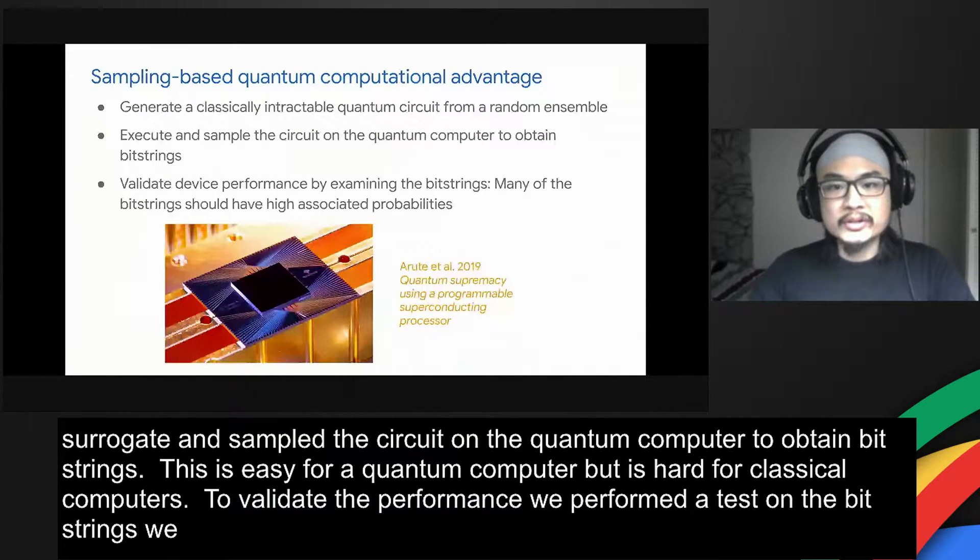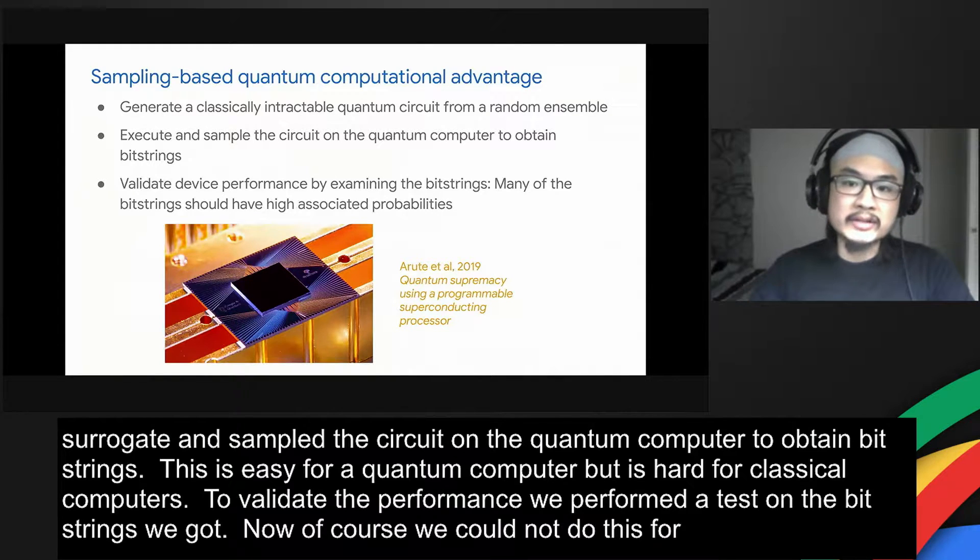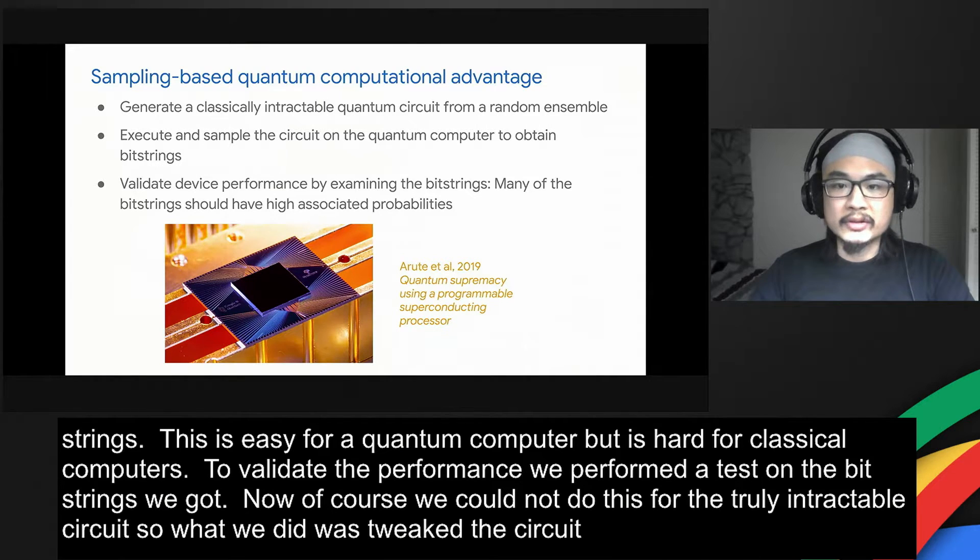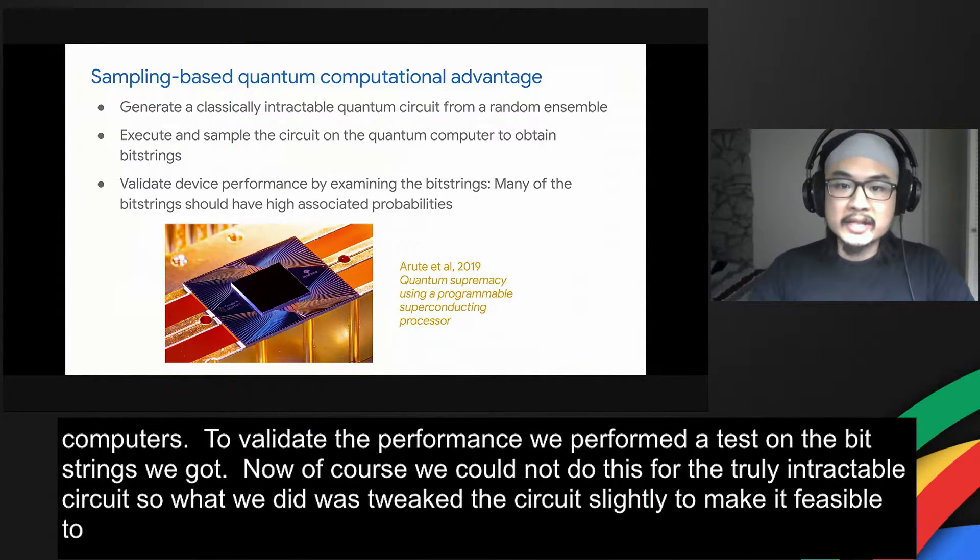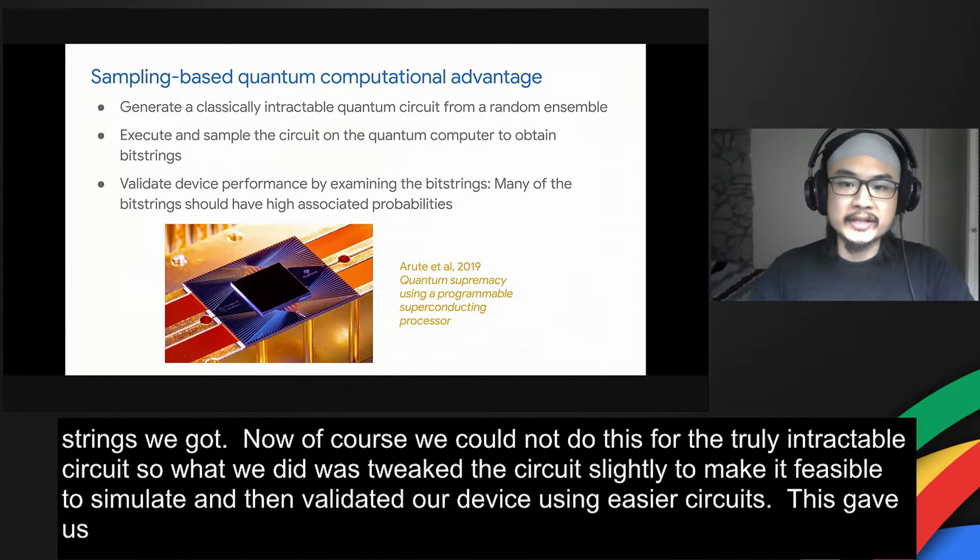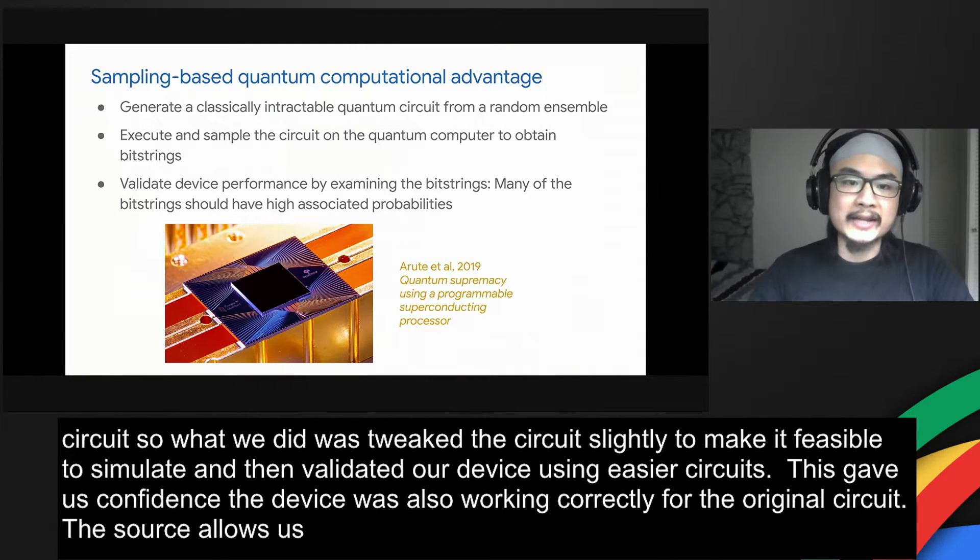Of course, we couldn't do this for the truly intractable circuit, so what we actually did was we tweaked the circuit slightly to make it feasible to simulate and then validated our device using those easier circuits. This gave us confidence that our device was also working correctly for the original circuit. I want to emphasize here that the choice of qubit number, depth, and circuit tweaks allows us to adjust the classical difficulty of the sampling task and its verification.